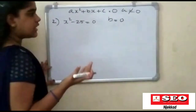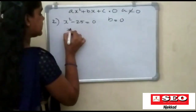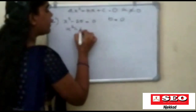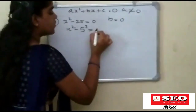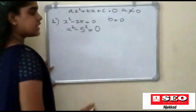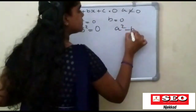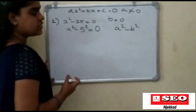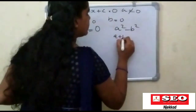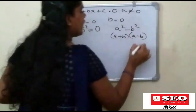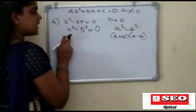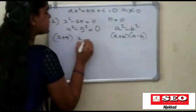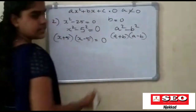We are going to substitute into x squared minus 3, x is equal to zero. Using the equation a plus b into a minus b, where a is x and b is pi. So x plus pi into x minus pi is equal to zero.